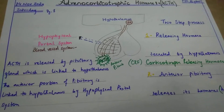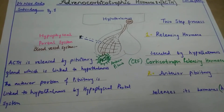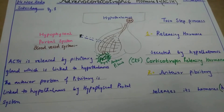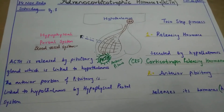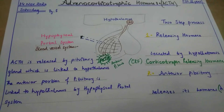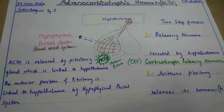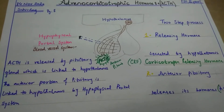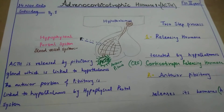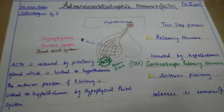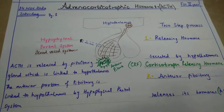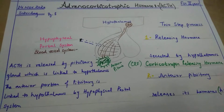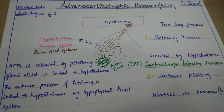Until the hypothalamus sends a releasing factor through neurons, the anterior pituitary will not be stimulated to release its hormones. In this case, we are talking about the adrenocorticotrophic hormone.